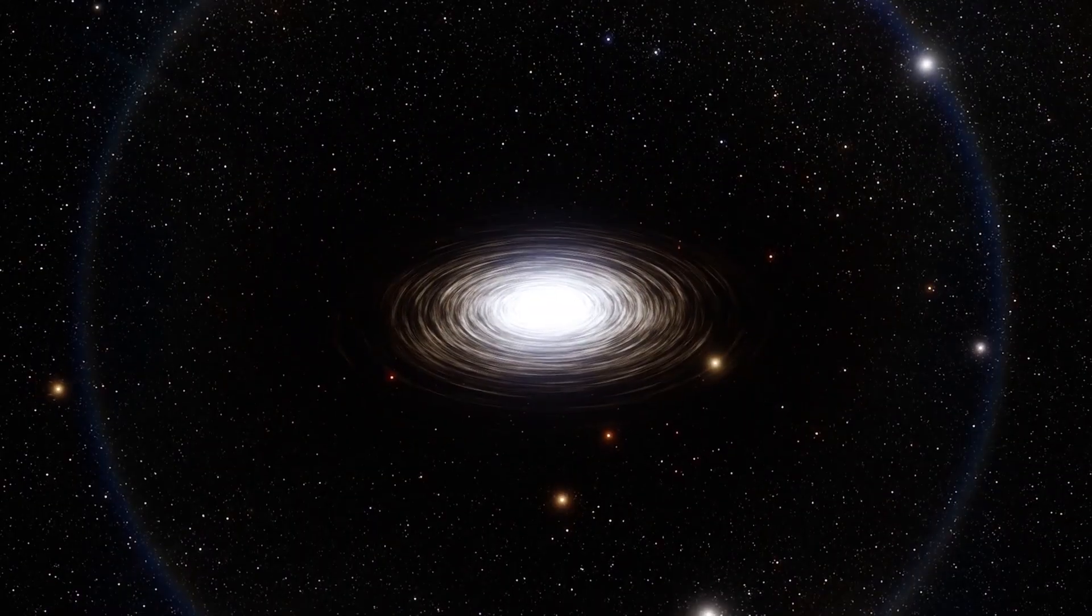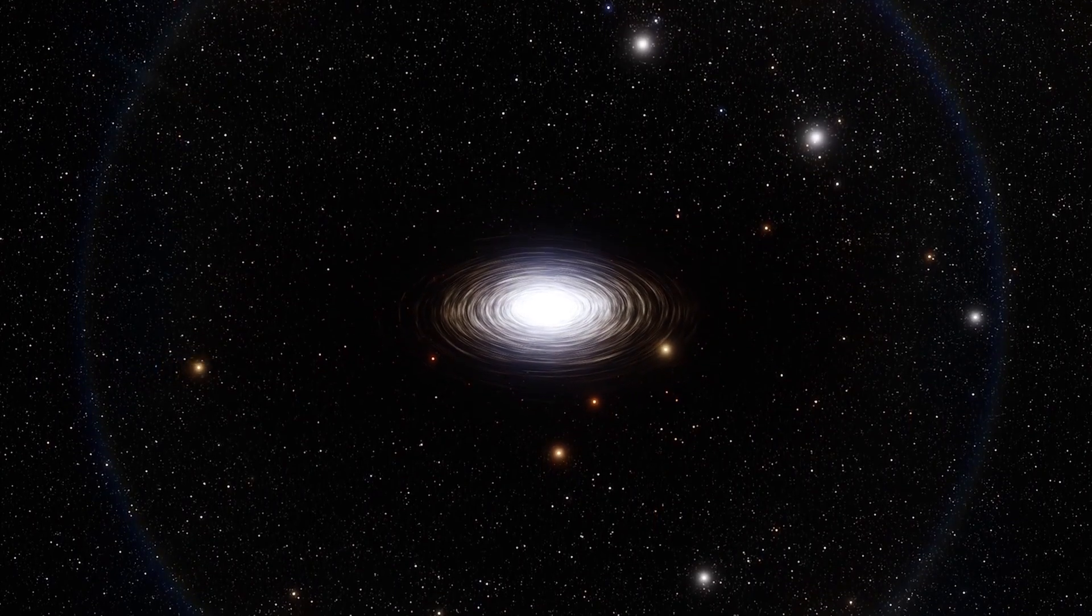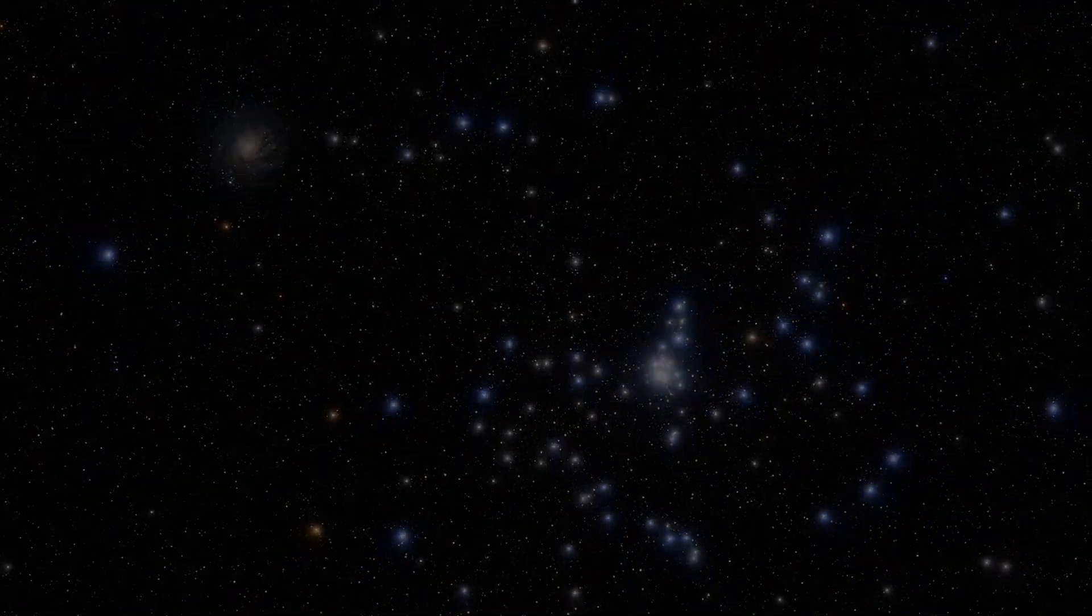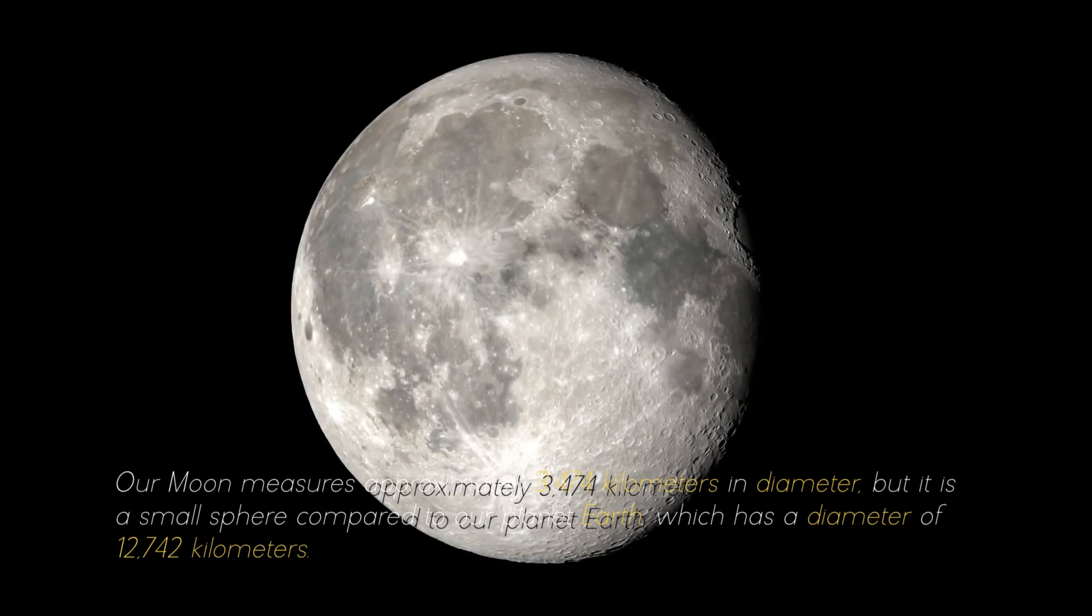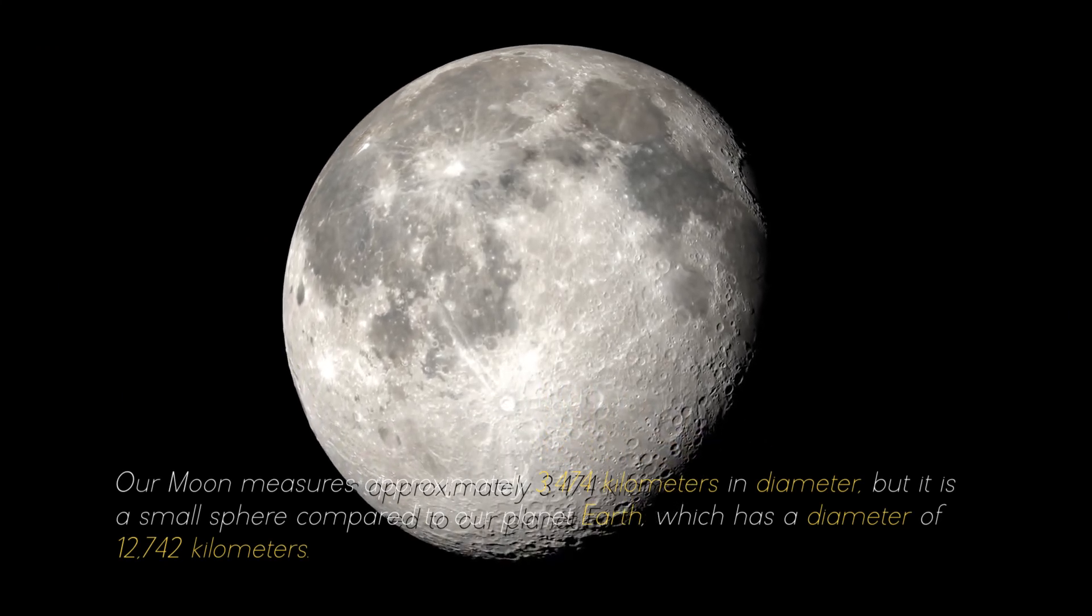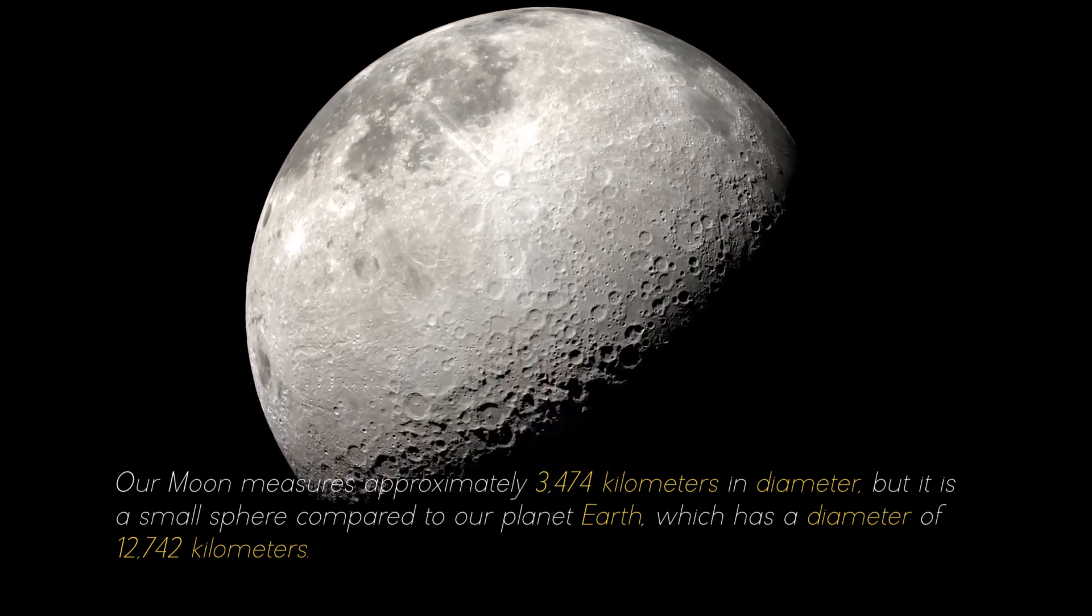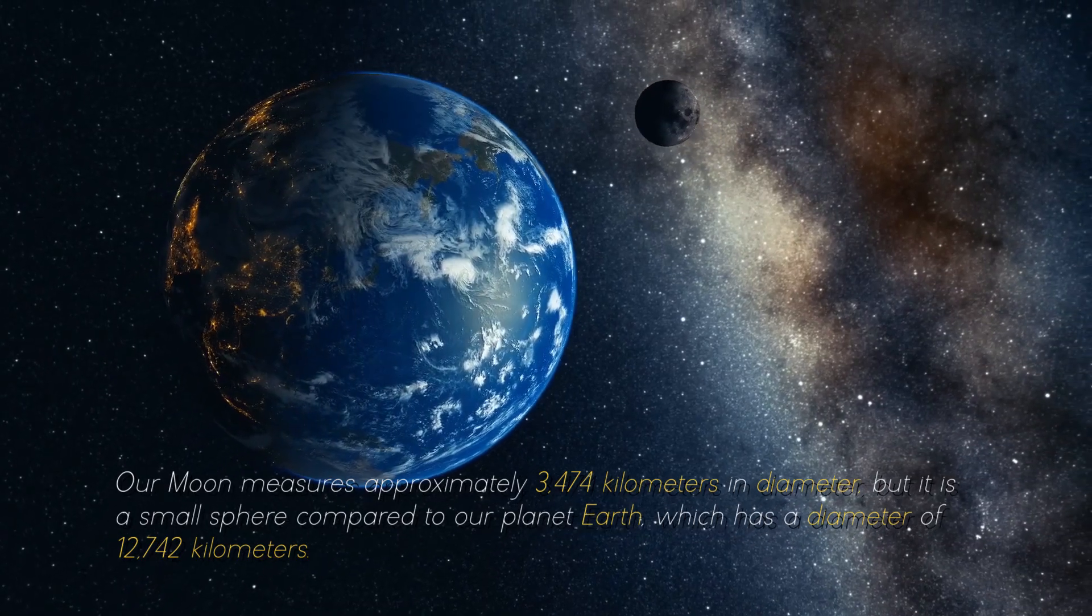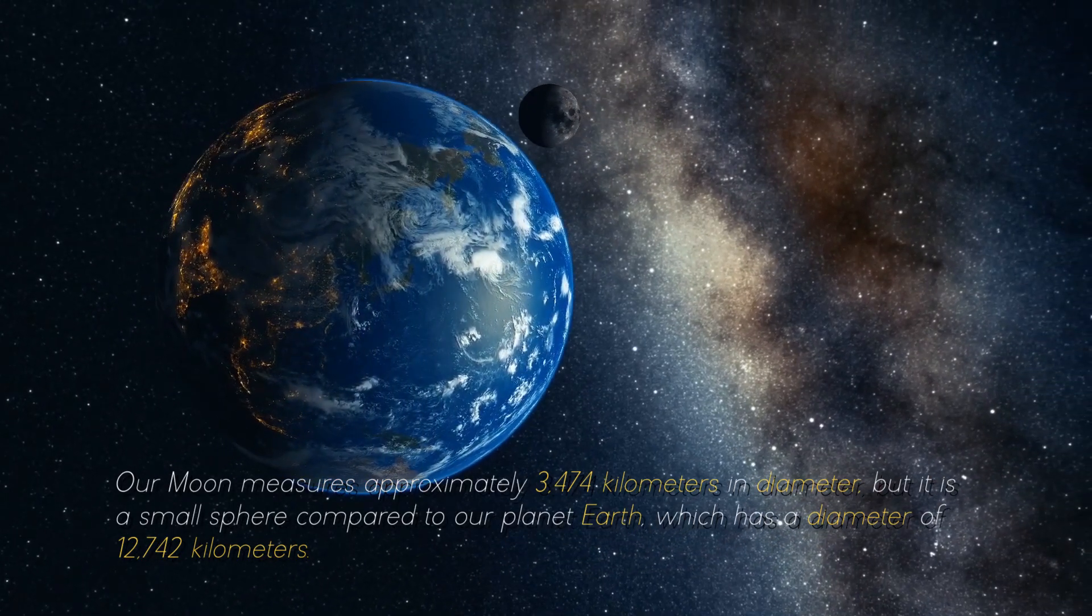To give you an idea of the colossal objects and structures that abound in the cosmos, it is necessary to start at the beginning. Our moon measures approximately 3,474 kilometers in diameter, but it is a small sphere compared to our planet Earth, which has a diameter of 12,742 kilometers.